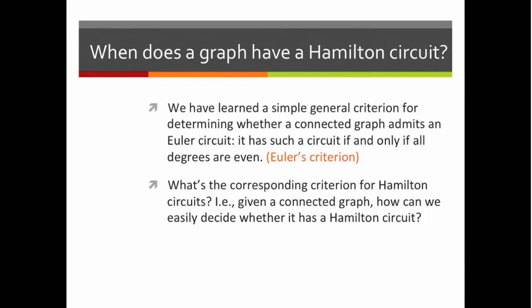And the answer to that question, in fact, is nobody knows a nice simple criterion for determining whether a connected graph has a Hamilton circuit. If you're given any particular graph, of course, just by some exhaustive method, you can figure out whether it has a Hamilton circuit. But nobody knows a nice simple criterion analogous to Euler's criterion.